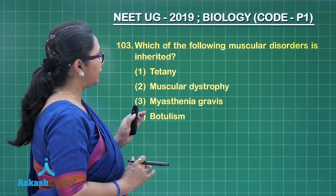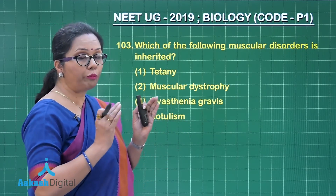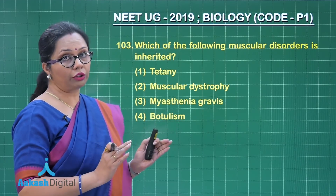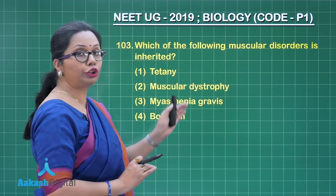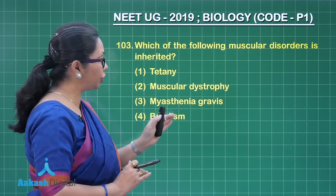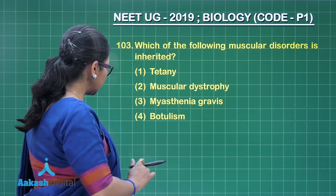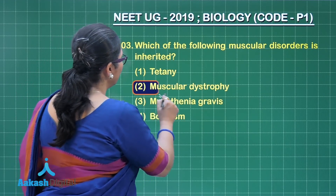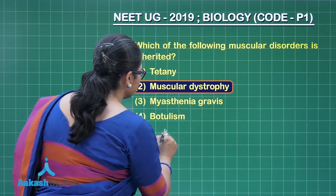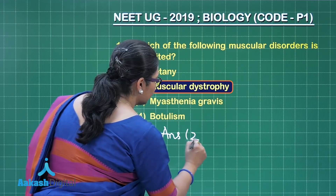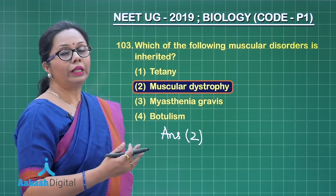The second choice is muscular dystrophy, which is a genetic disorder in which the important structural muscular protein dystrophin is not formed. The gene for dystrophin has a mutation, leading to this genetic disease. So the correct answer is Option 2.